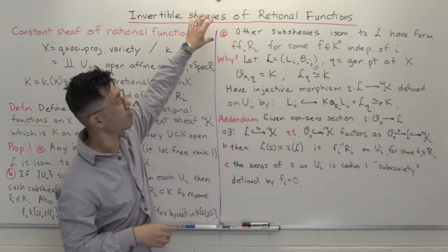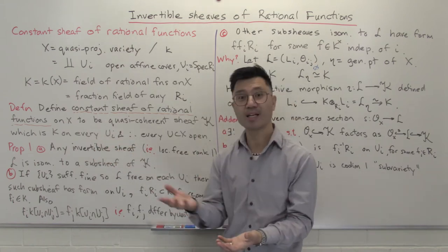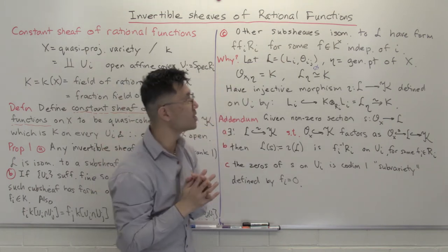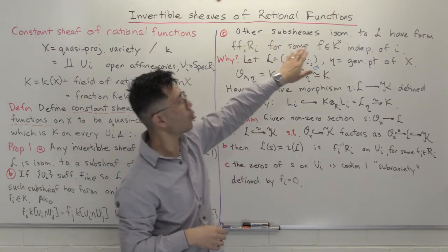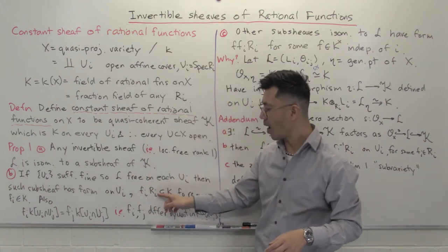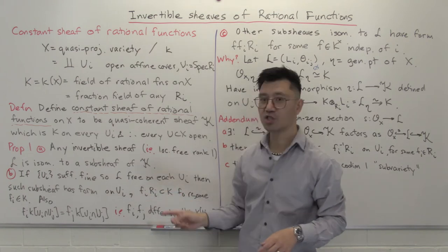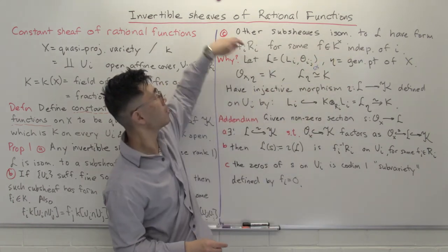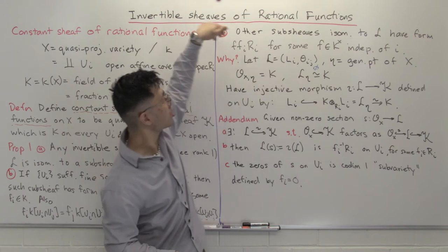We've shown that every invertible sheaf is isomorphic to some sub-sheaf of K, but is that sub-sheaf unique or is there lots of choice? There is unfortunately lots of choice — but we have very good control on what those choices are. Suppose you have something given as sub-sheaf of K by these f_i R_i on U_i, with these f_i's satisfying the compatibility condition. One way you can change that is to pick one non-zero rational function F and multiply all the f_i's by that single F — on U_i it'll be F times f_i R_i.